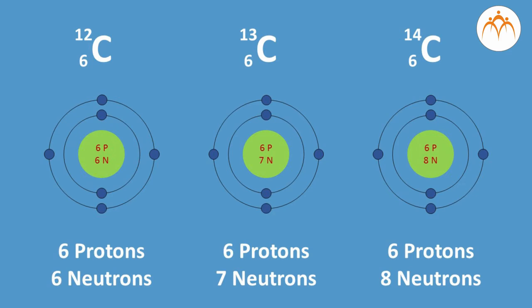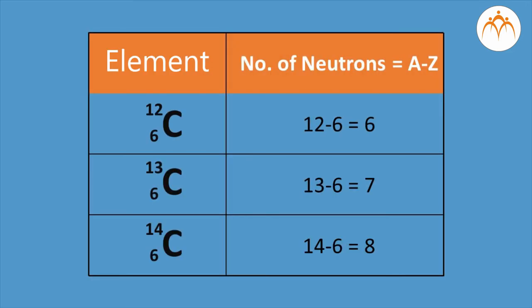Z equals 6, which equals the number of electrons and number of protons, for all three atoms. But the mass number A is different for all three. The element 6C12 has neutrons = A − Z = 12 − 6 = 6. The element 6C13 has neutrons = 13 − 6 = 7. The element 6C14 has neutrons = 14 − 6 = 8.